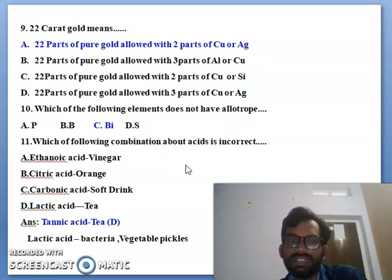You can look into the ninth one bit: 22 carat gold means what does the meaning of 22 carat gold? So 22 parts of pure gold alloyed with two parts of copper and silver. So 22 parts of pure gold alloyed with two parts of copper and silver.